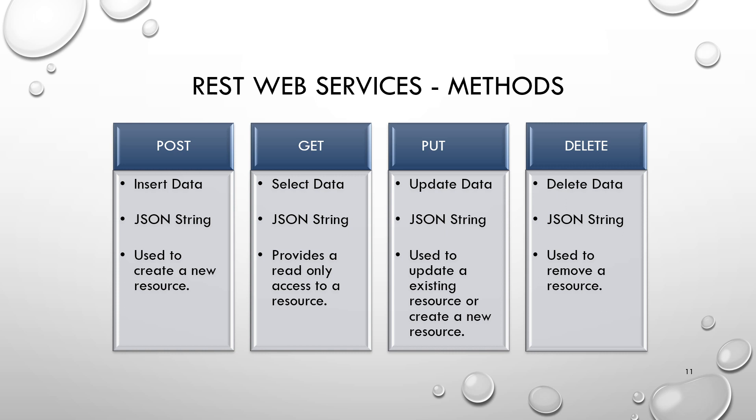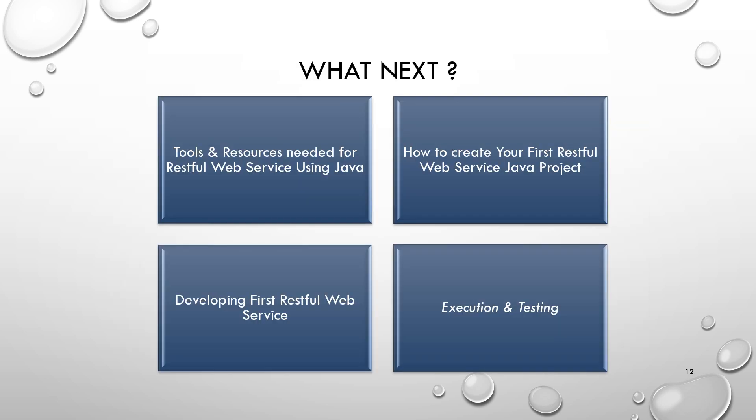REST web services have some built-in methods, and this is nothing new — they are provided for most CRUD operations. GET and DELETE are very commonly used and kind of self-explanatory. POST is basically used for inserting a new record into the database for a new request, whereas PUT is used to update existing resources. For example, if I'm placing a new order on an online shopping site, it will go as a POST request for the first time. After that, if I modify the order, it will go as a PUT request. So with this, we have come to the end of this video, and in the next tutorial we are going to see what tools and resources we will use for developing REST web services and how to create your first REST web service in Java, along with further coding.